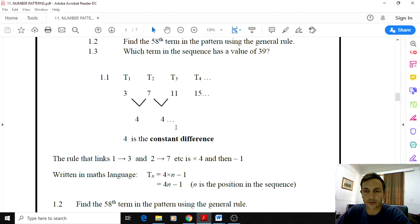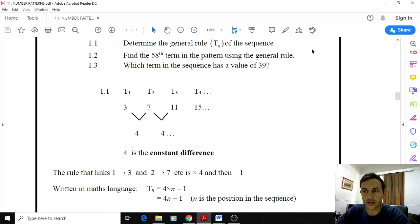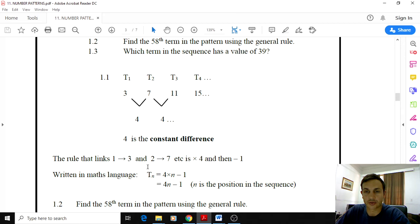So let's recap that. First thing you do if you get asked to determine the general rule, you find the constant difference. The constant difference in this case is 4. So you write down 4. And then 4 times n. So you pick any position. I usually pick 1. So 4 times 1. But then you write the value. You have to write the value of that position on this side of the equal sign. So you've got 3 equals 4. And then it's going to have to be minus 1 to be correct.